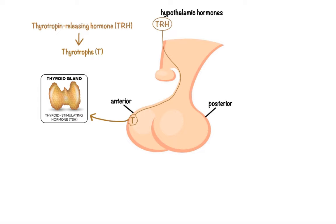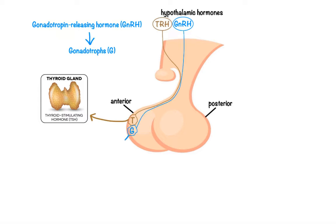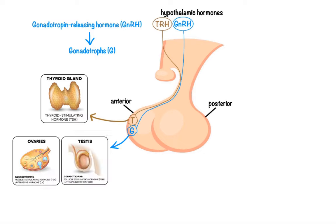The next one is gonadotropin-releasing hormone, GnRH for short, that stimulates gonadotrophs to release follicle-stimulating hormone and luteinizing hormone, which in turn stimulate the reproductive functioning of the ovaries and testes.